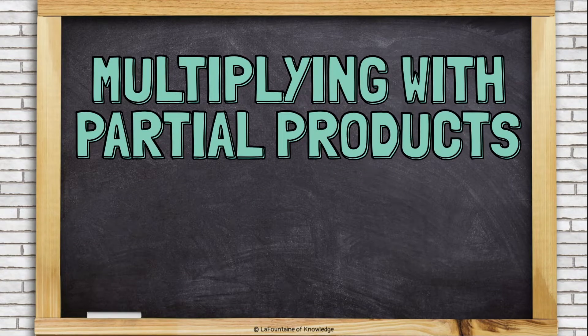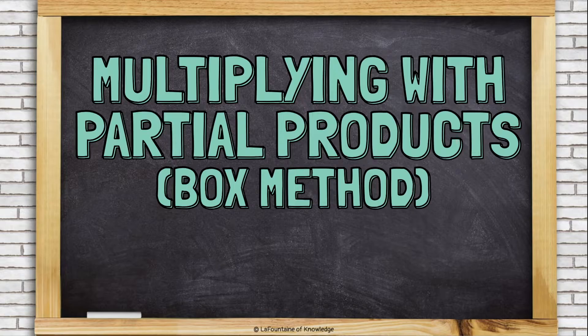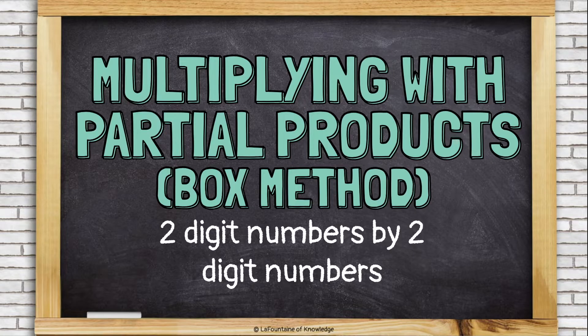Multiplying with partial products, also called the box method. In this lesson, we're going to learn how to multiply two-digit numbers by two-digit numbers.